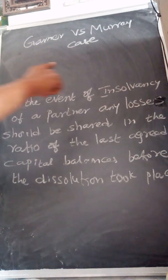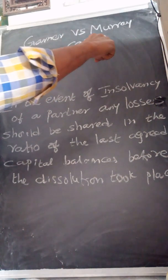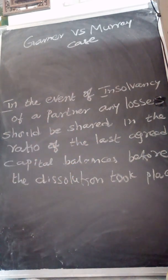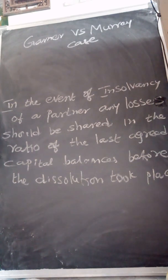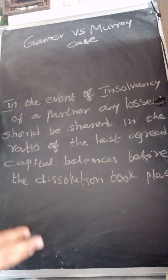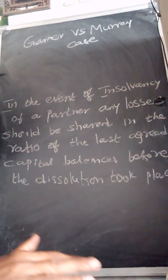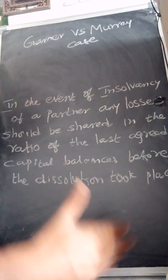Welcome, my dear students. The Garner vs. Murray case refers to partnership firms, specifically the dissolution of a partnership firm and the insolvency of a partner. In case of dissolution of the partnership business, if any debit balance exists in any partner's capital account, he has to bring that amount in cash. If the partner's account shows a debit balance and he is unable to bring any amount, he is said to be an insolvent partner.